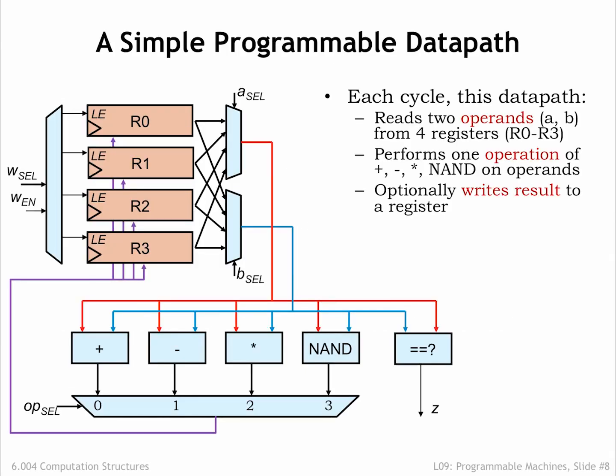Here's a datapath with four data registers to hold results. The A-cell and B-cell multiplexers allow any of the data registers to be selected as either operand for our repertoire of arithmetic and Boolean operations. The result is selected by the OP-cell MUX and can be written back into any of the data registers by setting the write-enable control signal to 1 and using the 2-bit W-cell signal to select which data register will be loaded at the next rising clock edge.